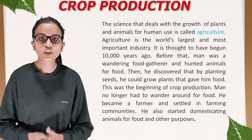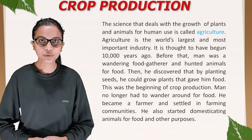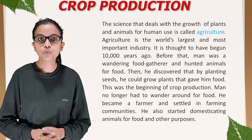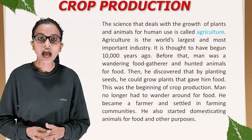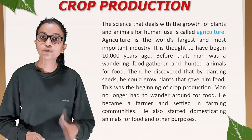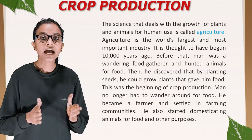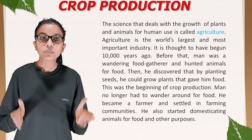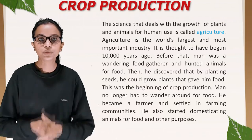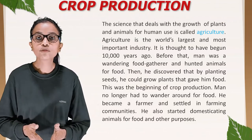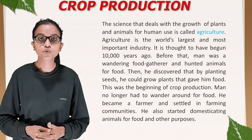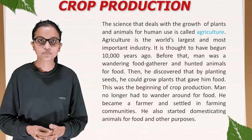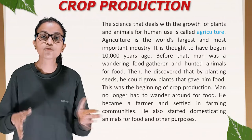The science that deals with the growth of plants and animals for human use is called agriculture. Agriculture is the world's largest and most important industry, thought to have begun 10,000 years ago. Before that, man was a wandering food gatherer and hunted animals for food. Then he discovered that by planting seeds he could grow plants that gave him food. This was the beginning of crop production. Man no longer had to wander around for food — he became a farmer, settled in farming communities, and started domesticating animals for food and other purposes.